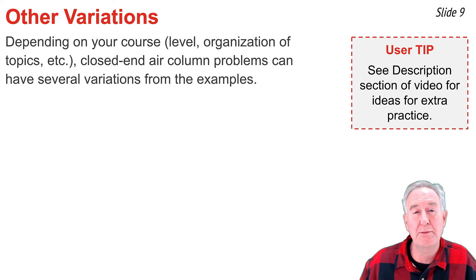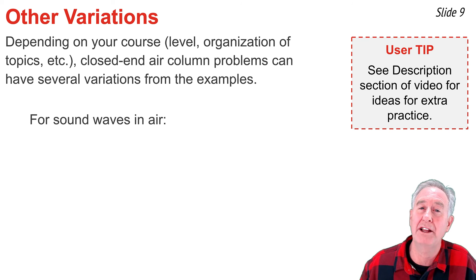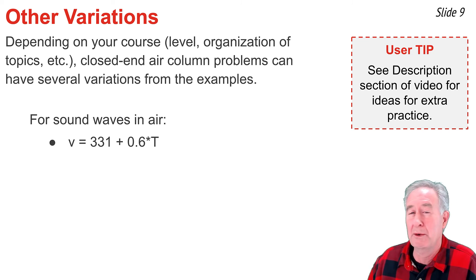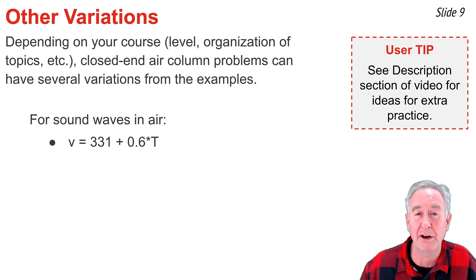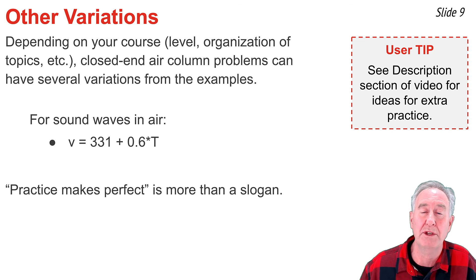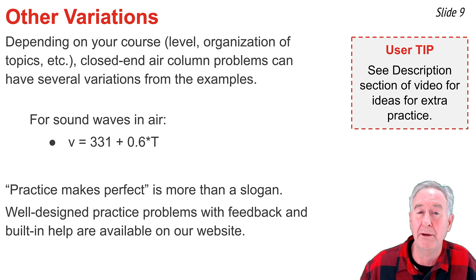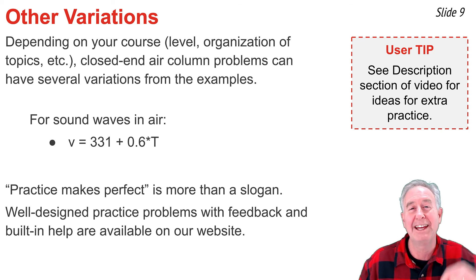I have now worked through five example problems, each of a different variety. One common variation involves calculating the speed of sound in air from temperature, using the equation where T is the temperature in degrees Celsius. Practice makes perfect — it's the method by which any physics student can become a better problem solver. To facilitate practice, we have a section on our website called the Calculator Pad with well-crafted problems, immediate feedback, correction opportunities, and links to helpful information.